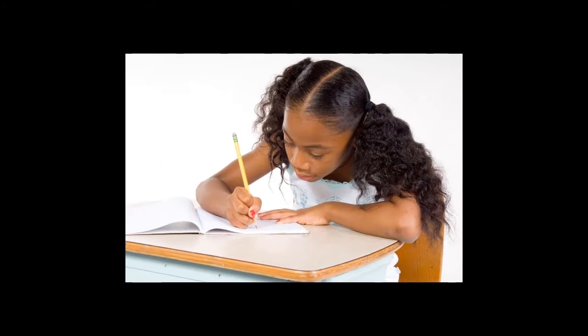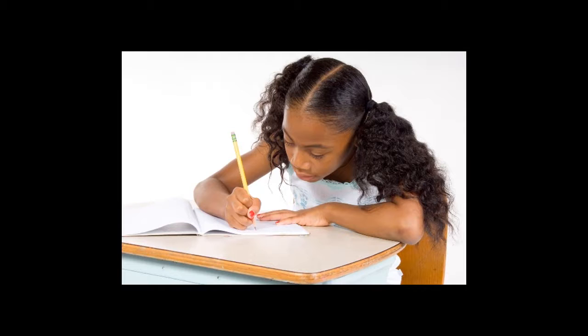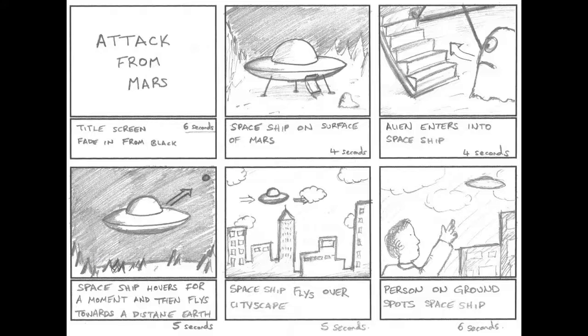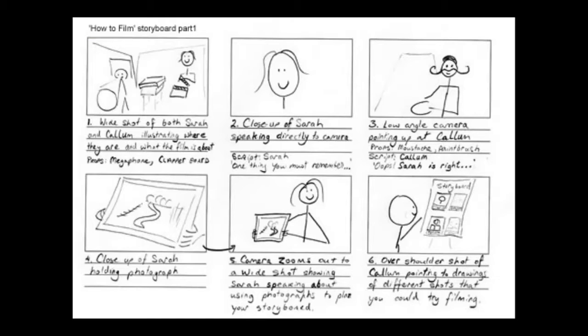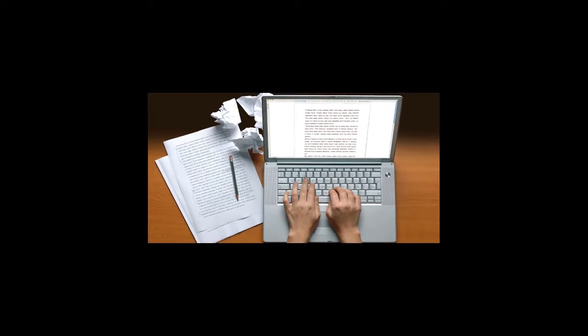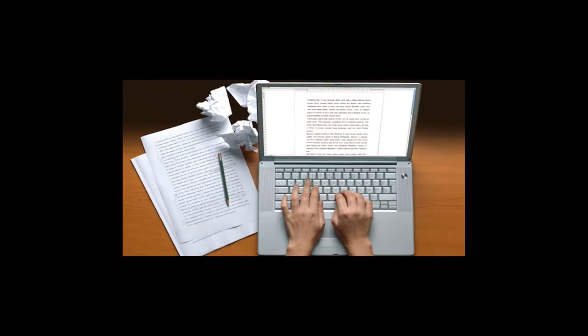Depending on your creative process, you may write a script first, or you may prefer to sketch out your scenes on a storyboard. A storyboard is a series of panels with a place to plan and draw scenes from your story, as well as plan out action, special effects, and dialogue. It doesn't matter which order this process goes in — storyboard or script — but in the movie business, the script usually comes first. I work better from a script; then I can imagine what sort of images best match the words.